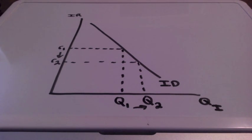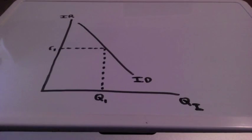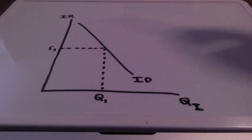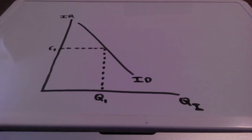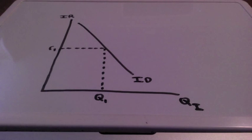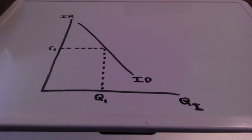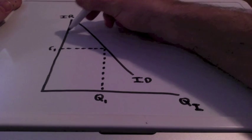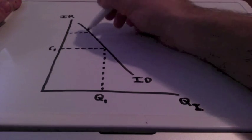So we once again have R1 representing the interest rate and Q1 representing the quantity of investment in a downward sloping investment demand curve. Let's say the interest rates increase this time.